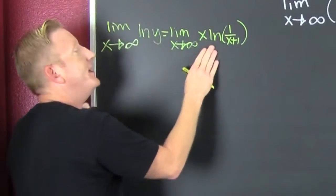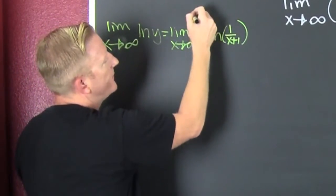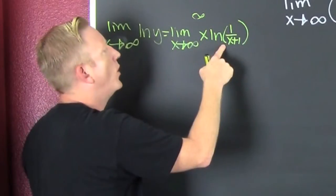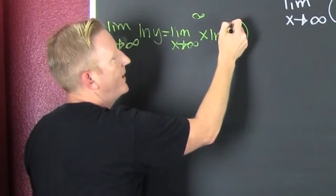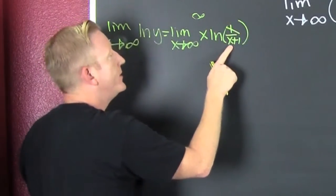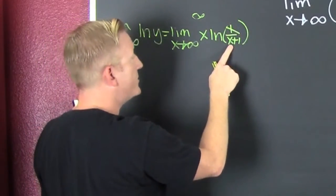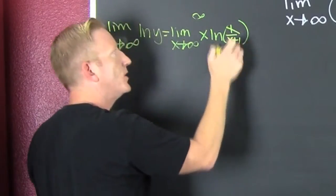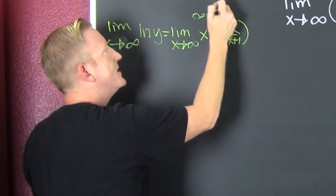So here we see this is infinity. The natural log of one is zero, so this is an infinity times zero indeterminate form.